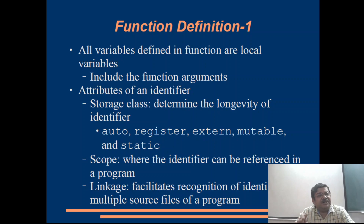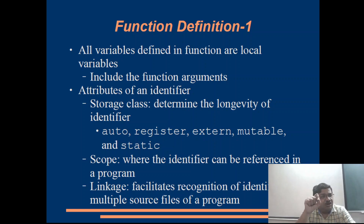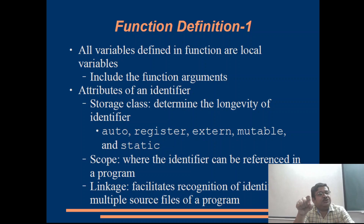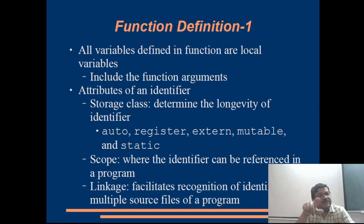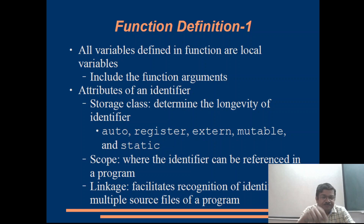In contrast, if we define an identifier with the static keyword — for example, static int x initialized to 0 — then this value 0 will be used only for the first instance of that function call. When the function is called for the first time, x will be initialized to 0. Subsequent calls will remember whatever value was stored in that location of x.